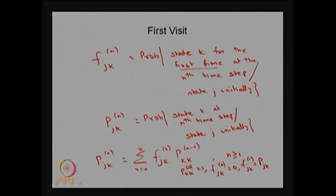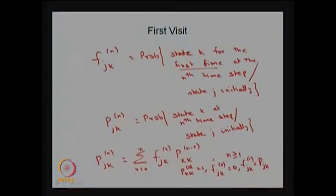The first time the system moves from state j to k in one step is the same as the one-step transition probability. For n greater than or equal to 1, the formula combines the first-visit probability with the not-necessarily-first-time n minus r step transition probability, covering all possible events to give the overall final probability. Here we have used the total probability rule as well as the Chapman-Kolmogorov equation for the time-homogeneous discrete-time Markov chain to derive the relation between p_jk and f_jk.